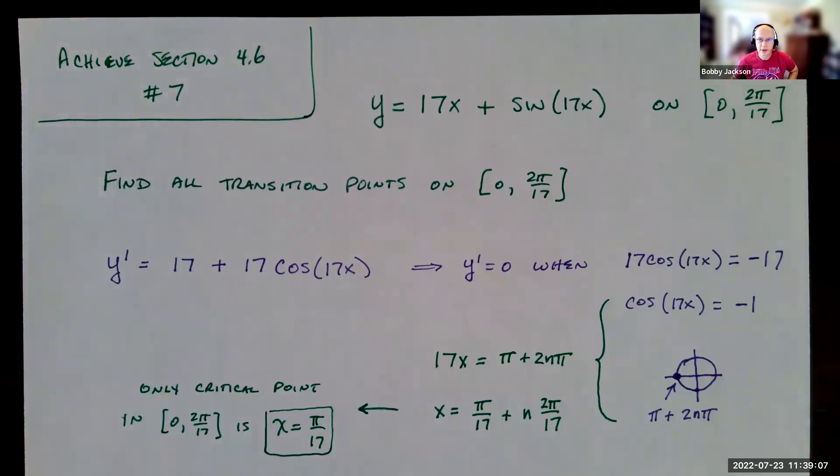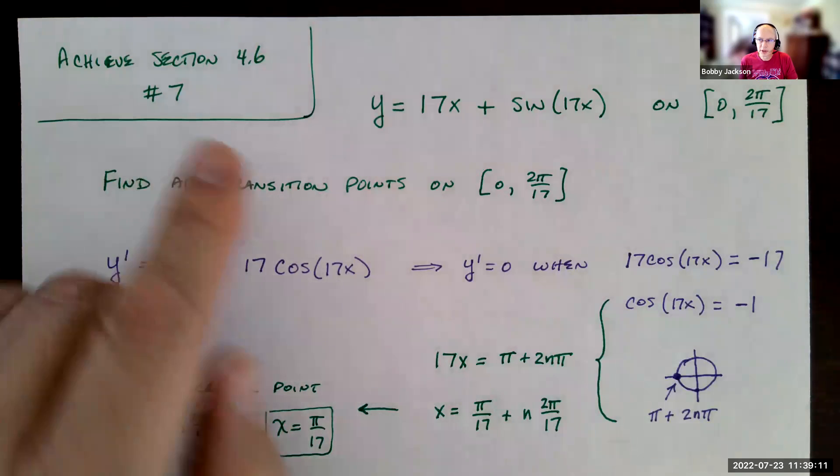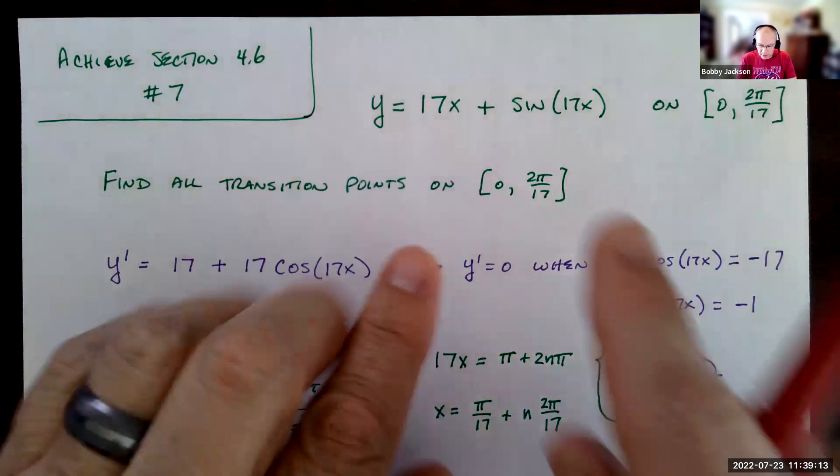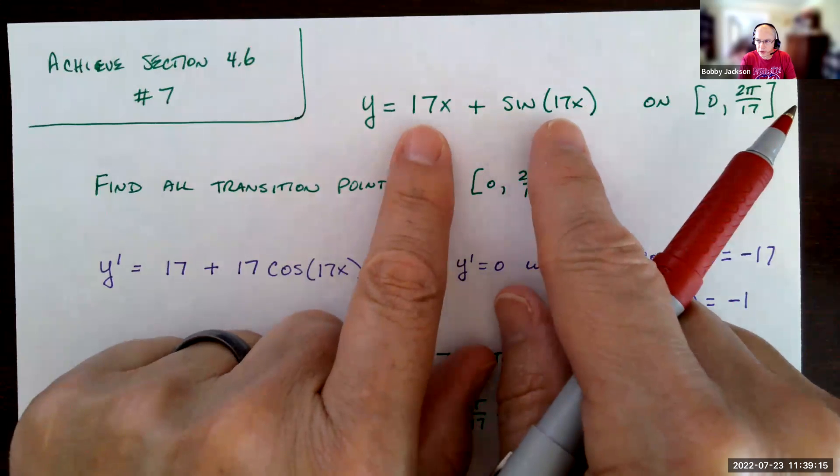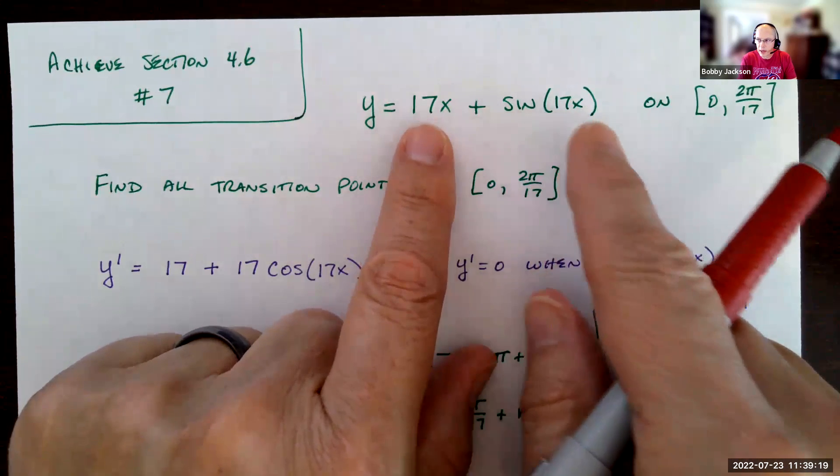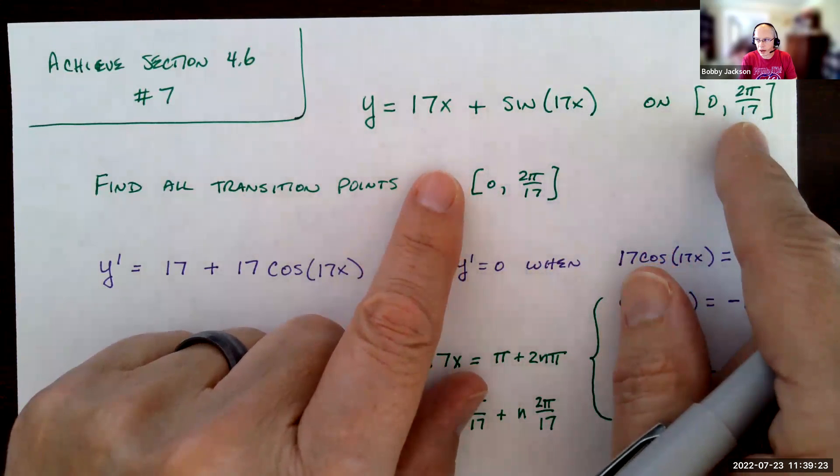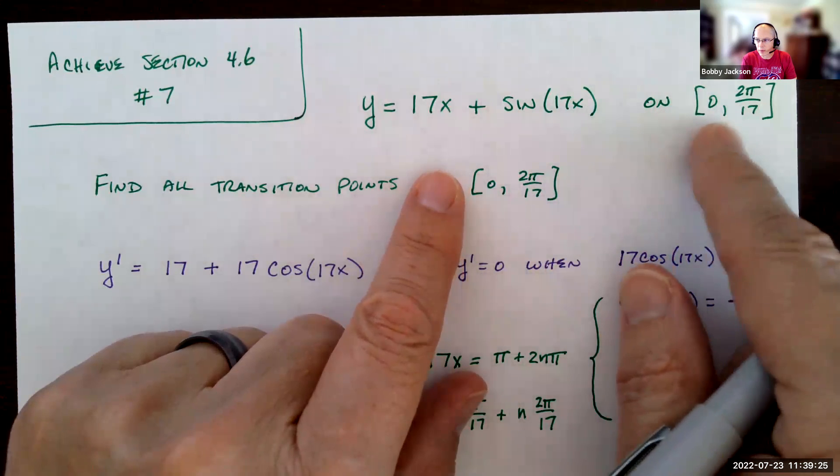Hey everyone, let's take a look at this problem from section 4.6 in Achieve. It's number 7. Given this kind of strange looking function, and your numbers here could be slightly different, I think they're both the same. And then on this strange interval from 0 to 2π over 17, that's kind of weird, isn't it?